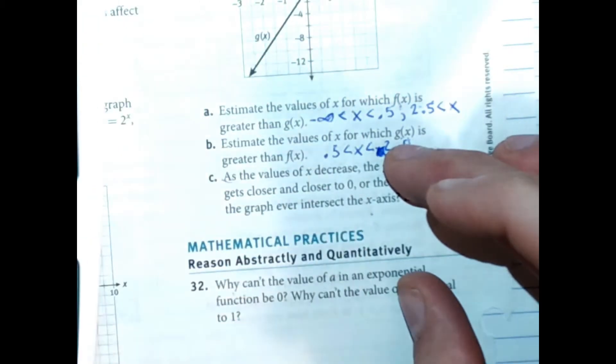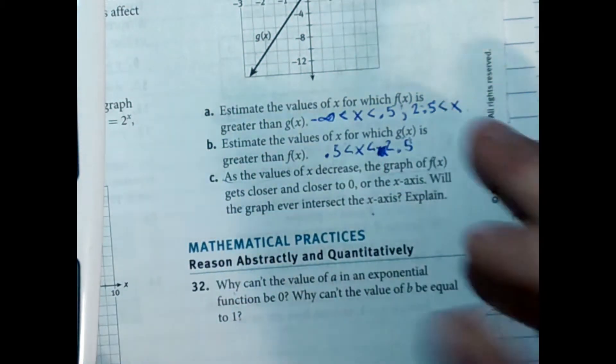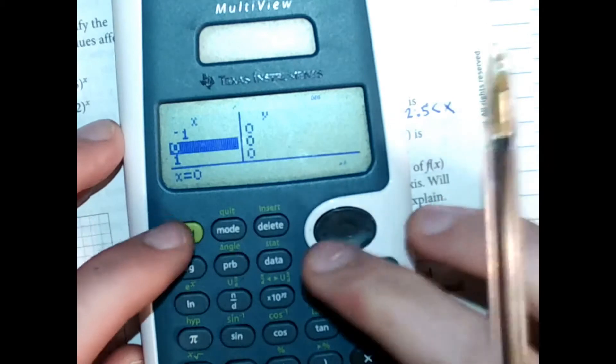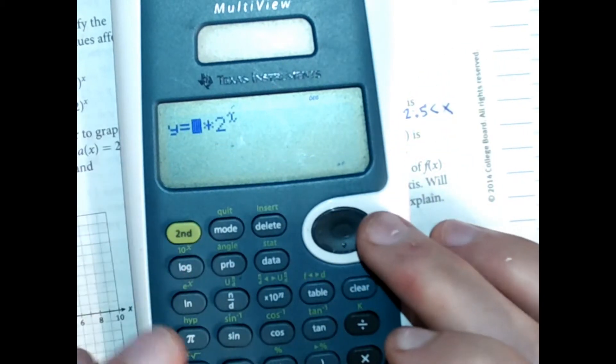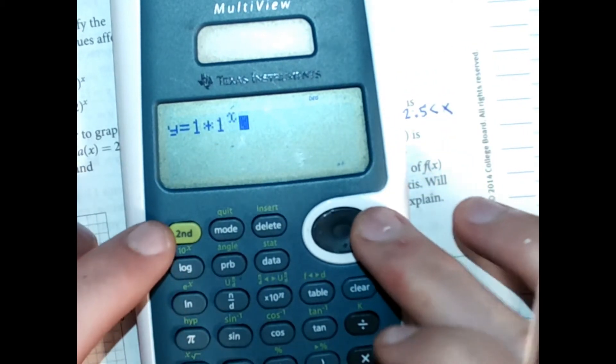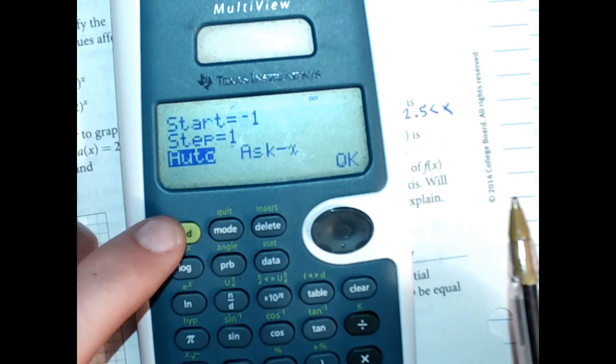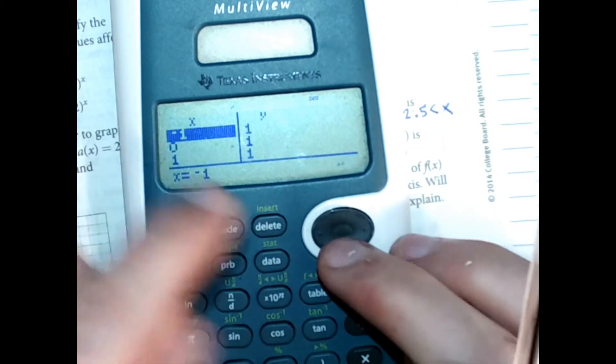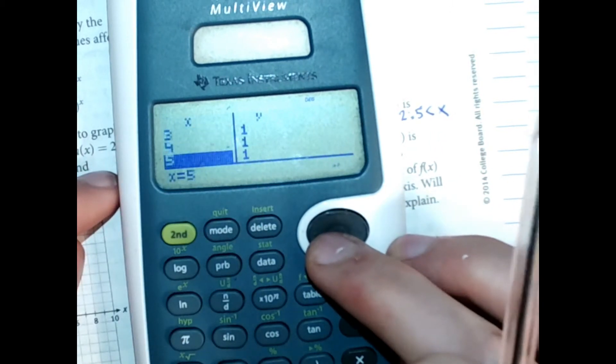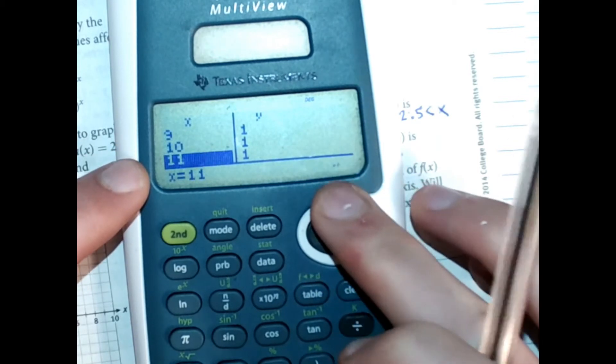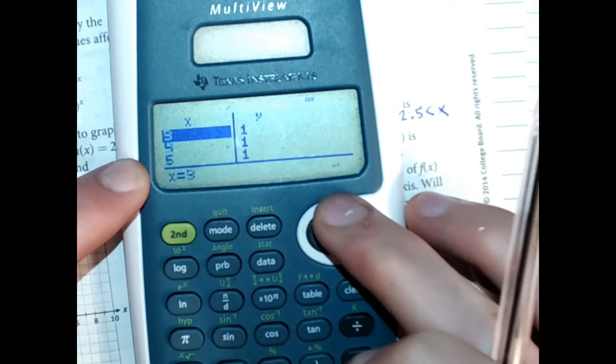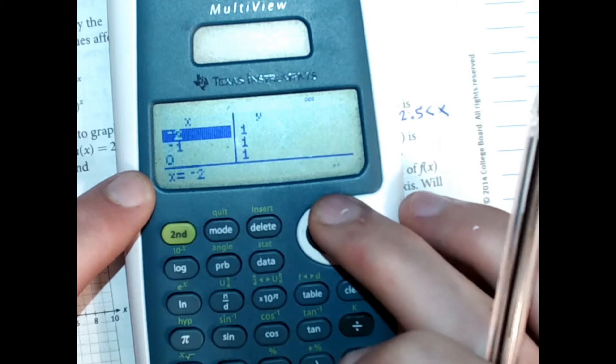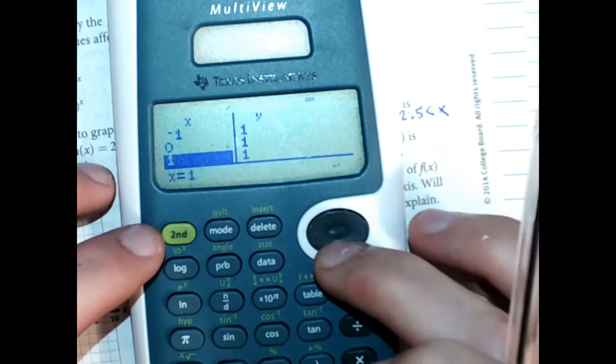And why can't the b value be equal to 1? Well, let's check the table here. Let's make a 1 and b 1. And we will go ahead and take a table. And look, now our y value is always 1. So there's no growth or decay. It's just a constant value.